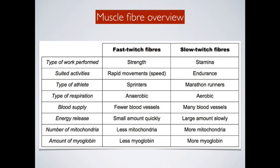To summarise: fast twitch fibres are for strength and rapid movements — sprinters benefit from them, the anaerobic energy systems are used, there are fewer blood vessels, a small amount of energy is released quickly, and there is less mitochondria and less myoglobin. Slow twitch fibres are more for stamina and endurance — marathon runners benefit, the aerobic energy systems are used, there are many blood vessels and capillaries to transport oxygen, a large amount of energy is produced slowly, and there is an increased amount of mitochondria and more myoglobin in those fibres.